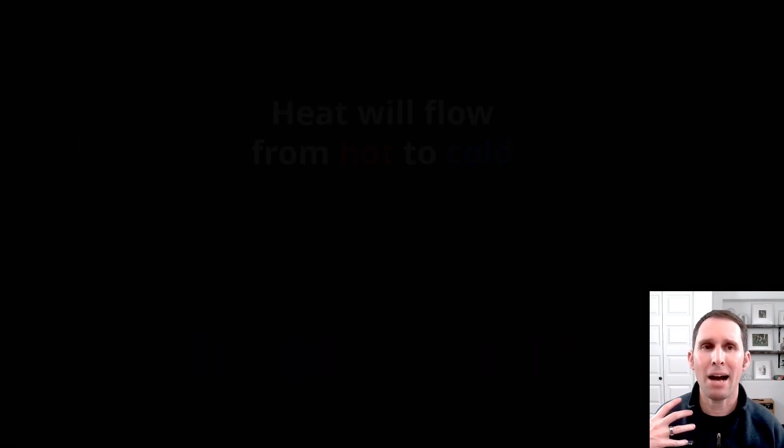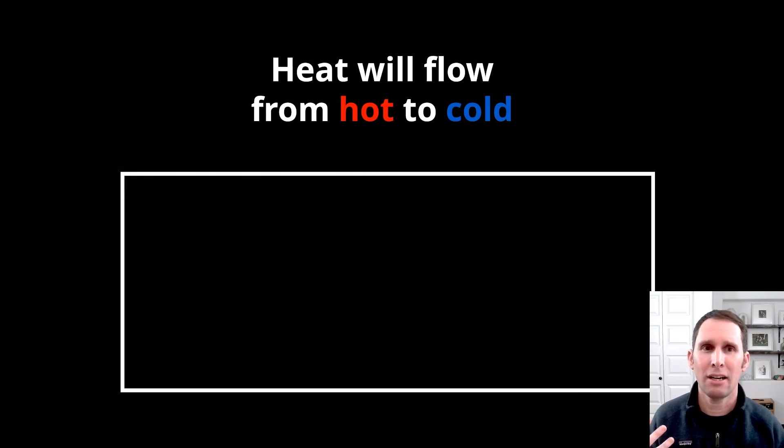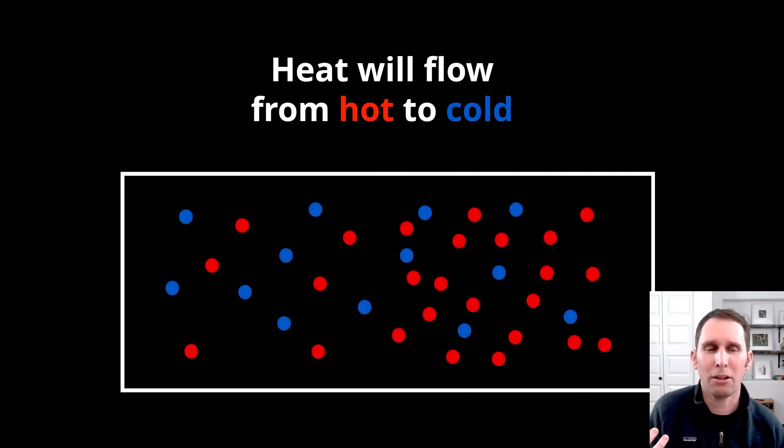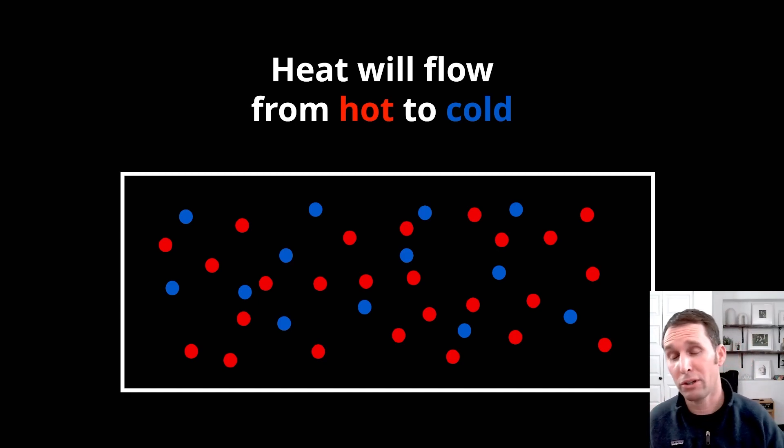So, I want you to imagine a box, right? And half of that box is hotter, has more hot molecules. The other part of it has less hot molecules. That heat will flow from the area of higher heat concentration to colder heat concentration till things are balanced.